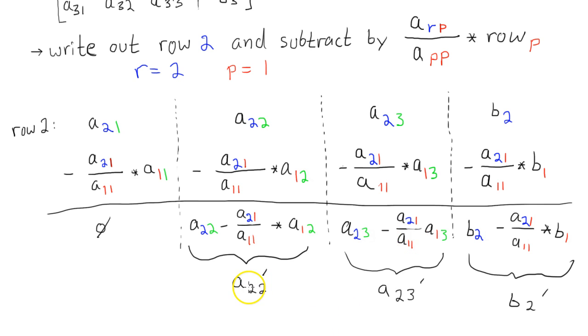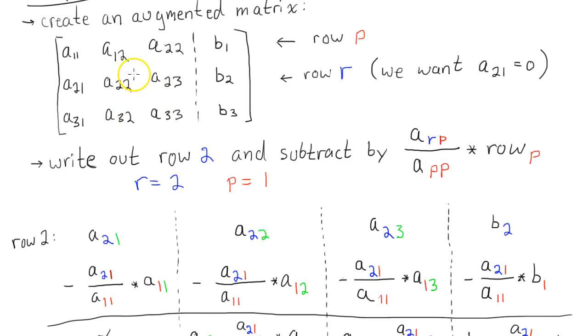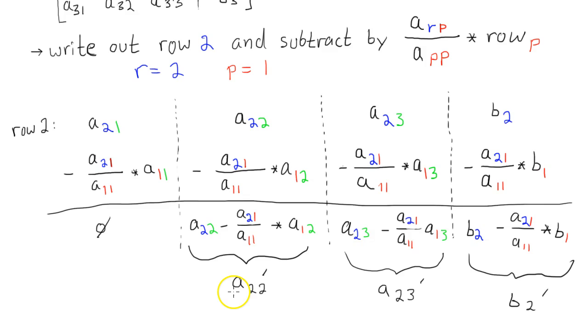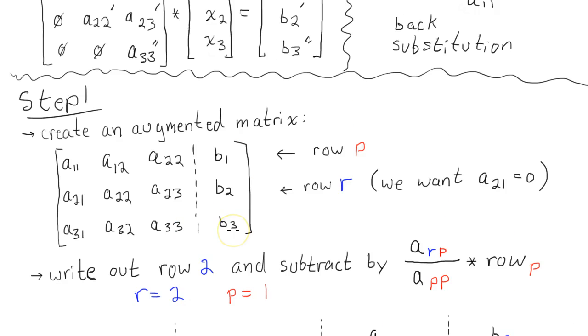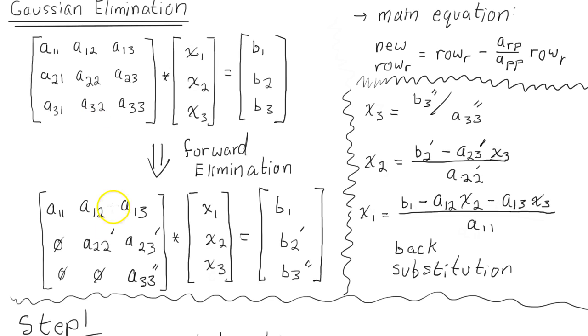And then, so this will be your modified A2, 2. This guy right here. Right there. That'll be your modified A2, 2. This will be your modified A2, 3, and your modified B2. So now we've got this guy right here. And that's done.